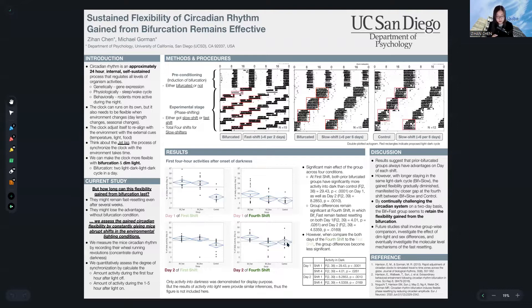The bifurcated group used to be very good at adaptation, but such advantages disappeared at the end of the study. The result basically suggests that by continually challenging the circadian system on a two-day basis, the bifurcated fast group mice seem to be able to retain the flexibility gained from the bifurcation even after four weeks. The advantages disappear with staying longer in the same given light-dark cycle.